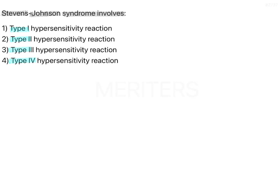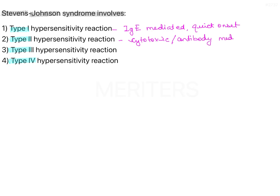A quick revision of the different types of hypersensitivity reactions: Type 1 is IgE mediated and is quick onset. Type 2 is cytotoxic or antibody mediated. Type 3 is immune complex, or IgG or IgM mediated. And lastly, type 4 is the delayed type of hypersensitivity reaction.